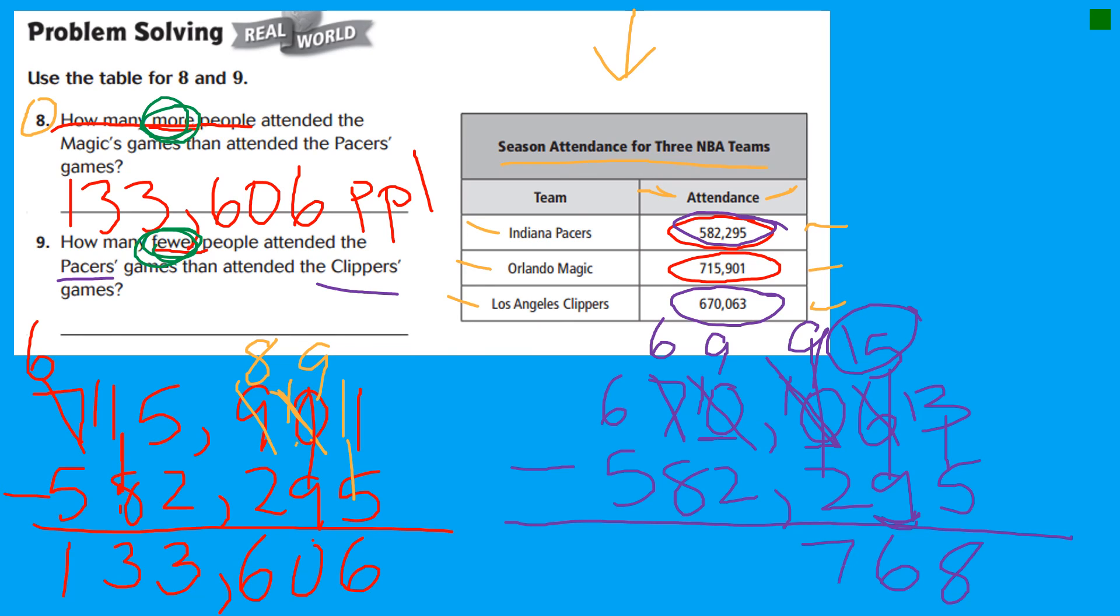So then we have nine minus two. Seven. Nine minus two again. Isn't that lovely? Seven. Six minus eight. Regroup. Sixteen minus eight. Oh, another fancy doubles fact. I know eight plus eight is sixteen.